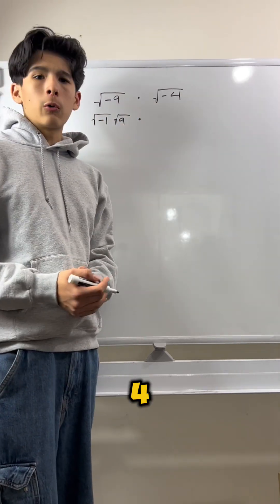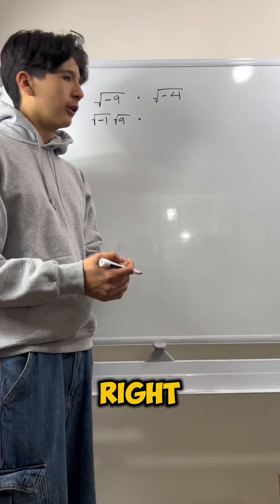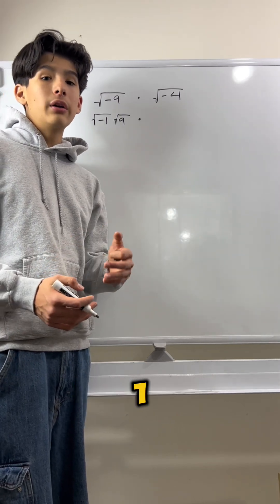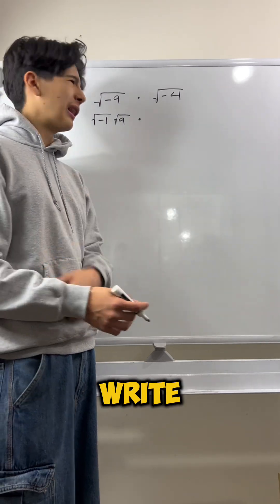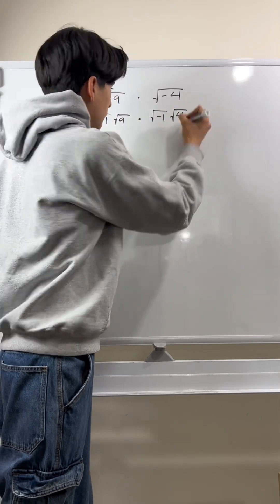Now, what is the square root of negative 4? Well, we could just do the same thing that we did right here. The square root of negative 4 is just the square root of negative 1 times the square root of 4. So, let's write it like that. Great.